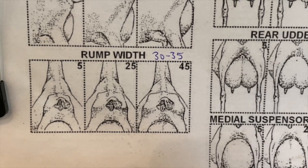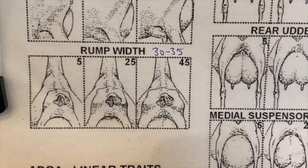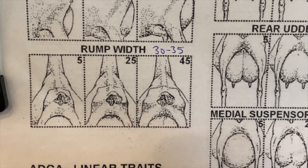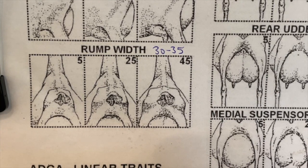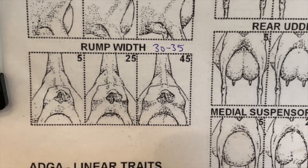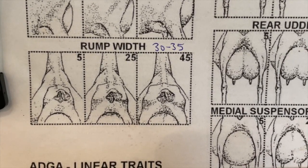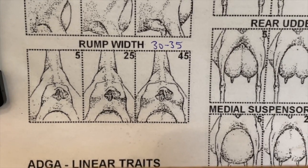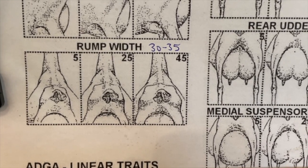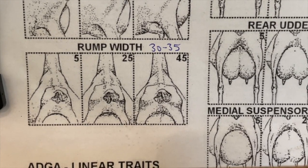For rump width, you're looking at the area on either side of the tail head getting wider with higher point scores. We're looking for about 30 to 35 points. A score of 5 shows a really narrow rump, and we'd worry about a doe like that having kidding issues. A wider rump also generally leads to a wider arch in the escutcheon area.